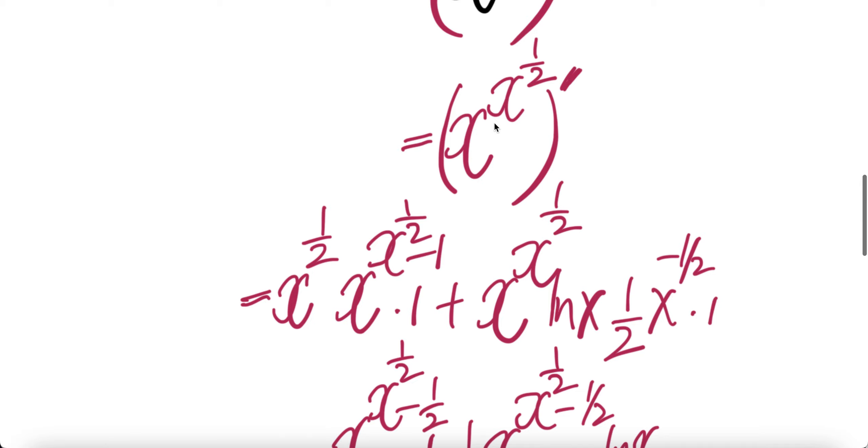The derivative of this is: this comes down and then x to power this less one, times the derivative of this is one. And then write the same thing, ln of the base times the derivative. This half comes down, half less one is minus half times one.